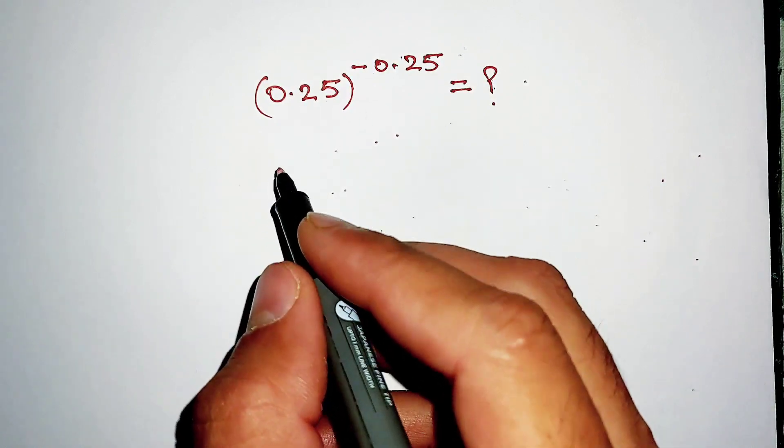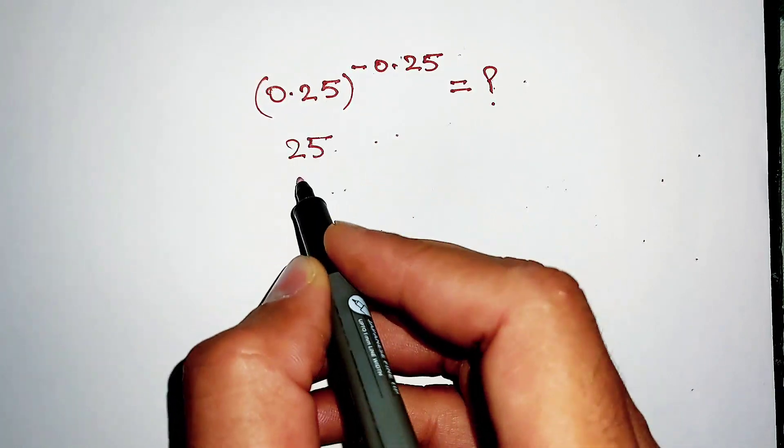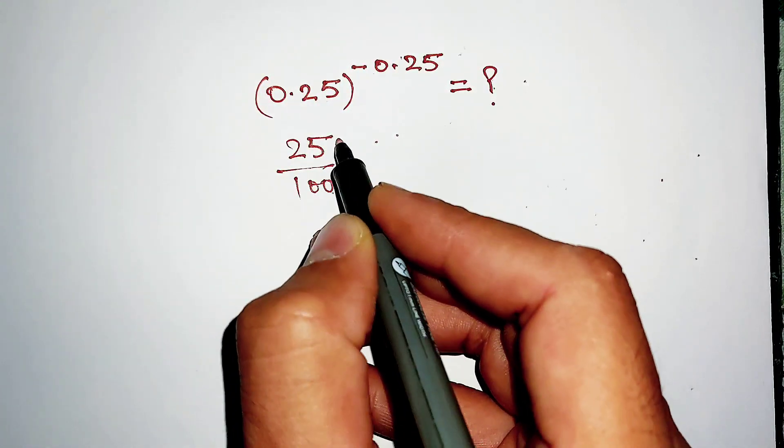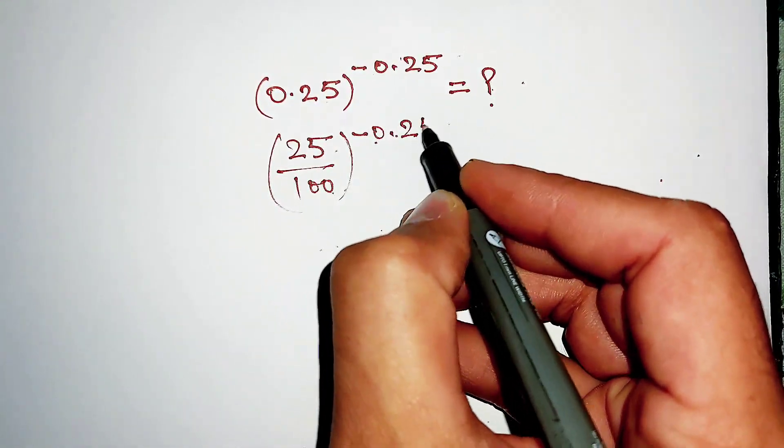Now first of all we can write this 0.25 as 25 divided by 100, and the power is negative 0.25.